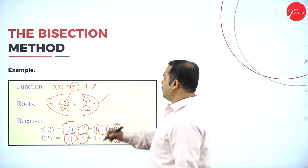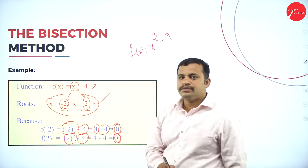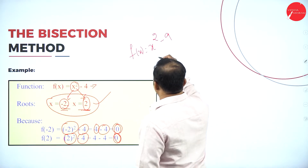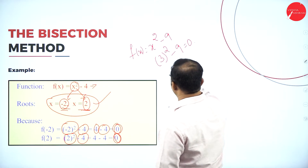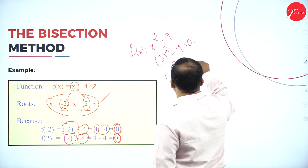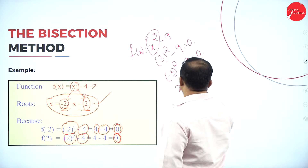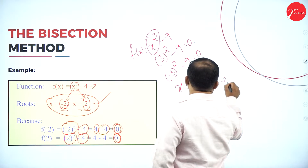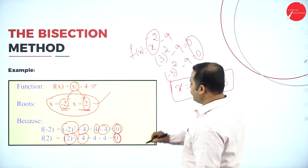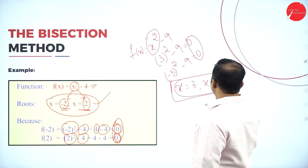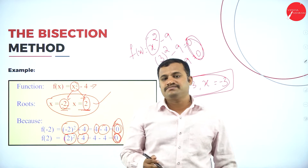Similarly, if I take one more example — f(x) = x² − 9 — what has to be the value of x? If I substitute x = 3: 3² − 9 = 0. And if I substitute x = −3: (−3)² − 9 = 0. So the two roots of the equation are +3 and −3. When we get the value zero, we say that this is the absolute root of an equation. Suppose if I do not get the value zero, then we shall see to it.